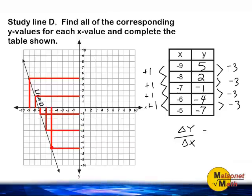To express this relationship, we would say for every change of negative 3 in the y-value, x changes by positive 1. So we would say the slope of our line is equal to negative 3 over 1, which may be simplified to negative 3.